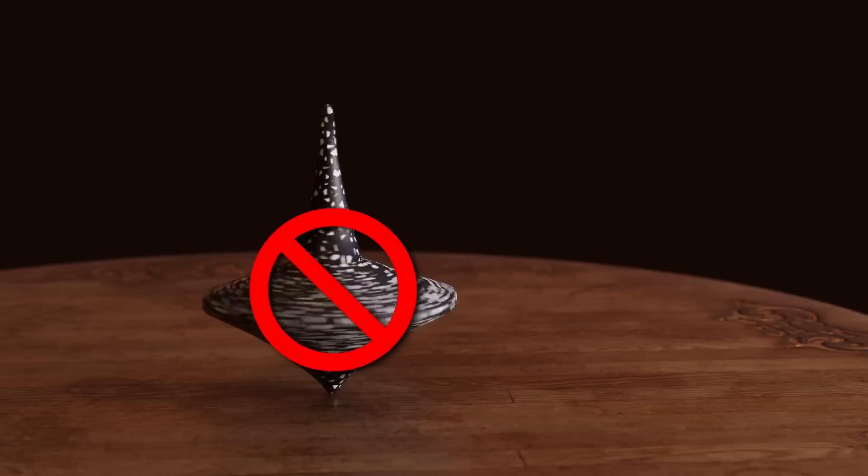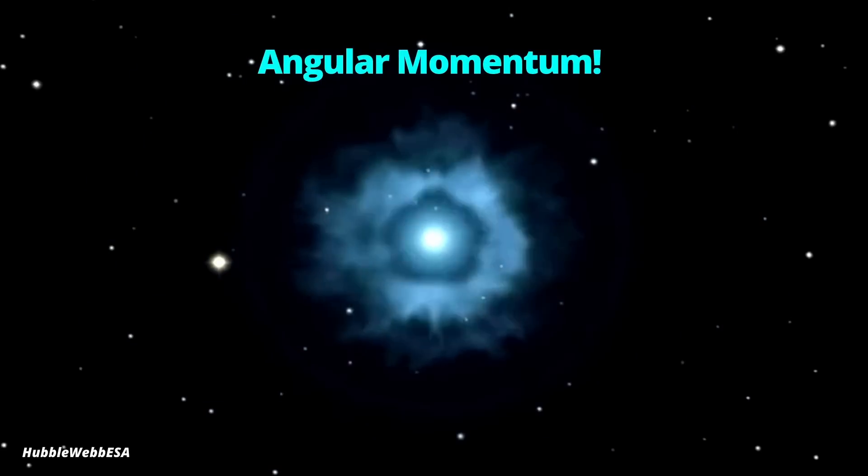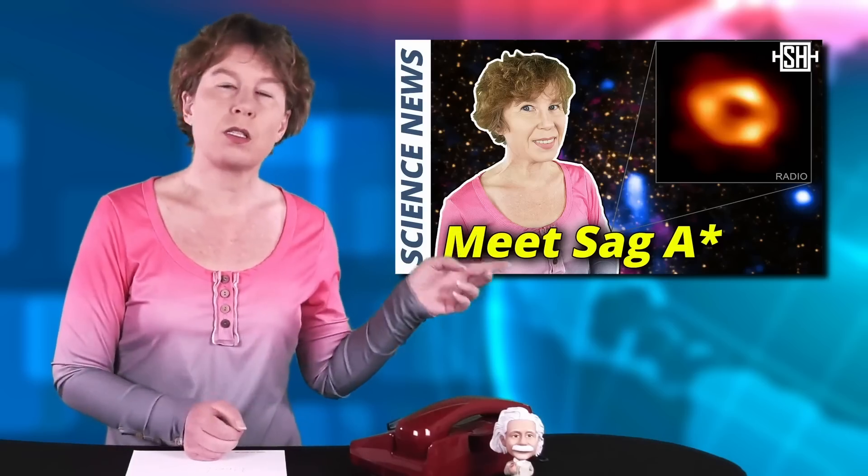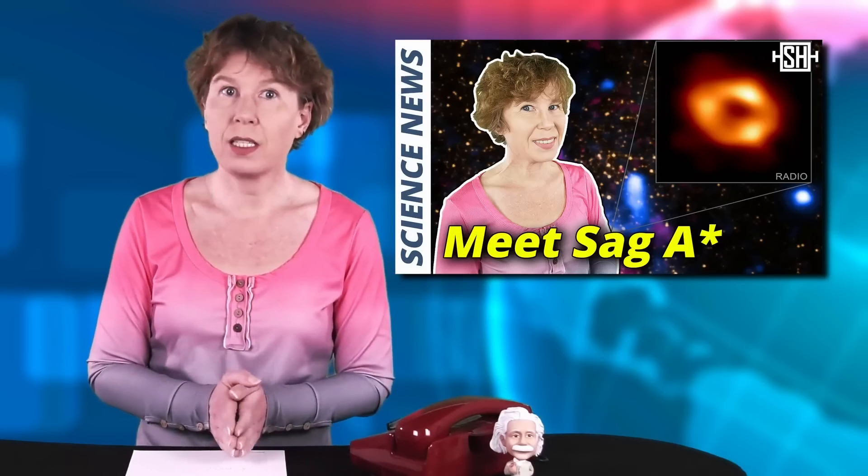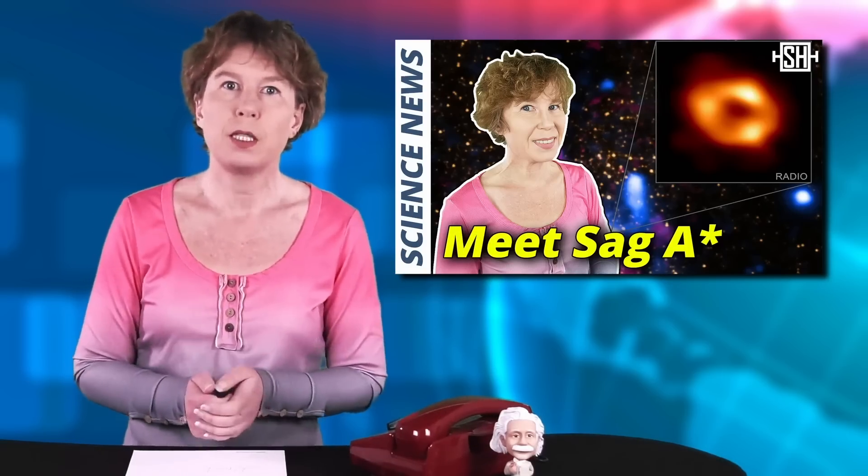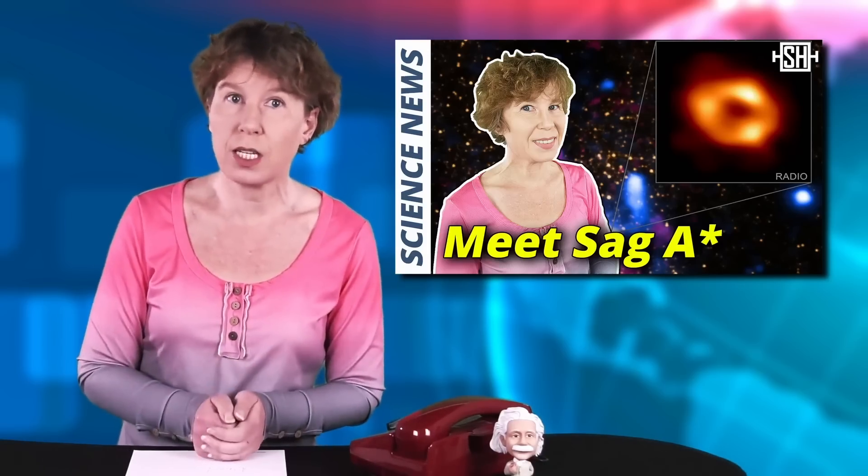In the real world, black holes rotate. That's just because when matter collapses to a black hole, it's very unlikely to not have any angular momentum. Indeed, as I just told you in a recent episode, the black hole in the Milky Way rotates at 60% of what's physically possible. So in this new experiment in Nottingham, they wanted to simulate a black hole which rotates.